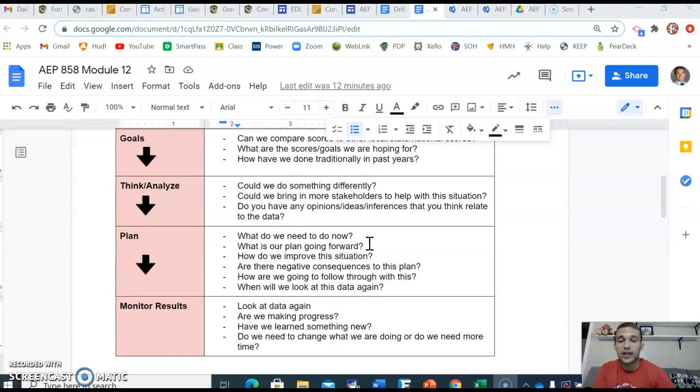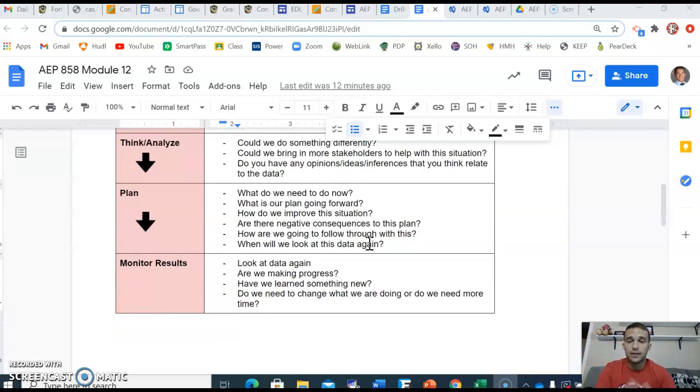Again, come back, think, analyze. Could we do something differently? Could we look at data differently? Could we bring in more stakeholders to get different opinions? Do we have any other ideas you think could relate to this data? And then let's come up with a plan. All right, what's our plan? What do we need to do now? What's our plan going forward? How do we improve the situation that's going on? How do we help the kids? Man, that's the big thing. Are there negative consequences to this plan? How are we going to follow through with this plan? And then when are we going to look at this again?